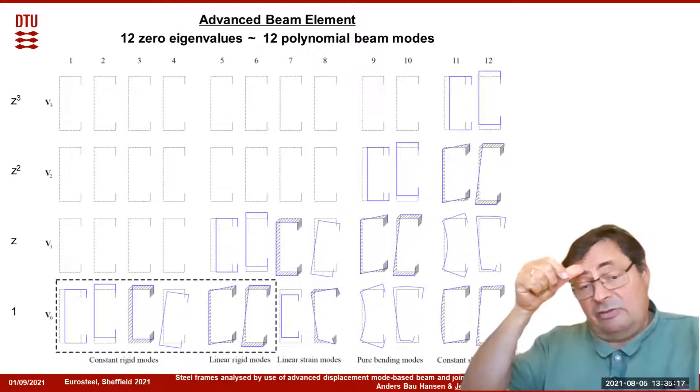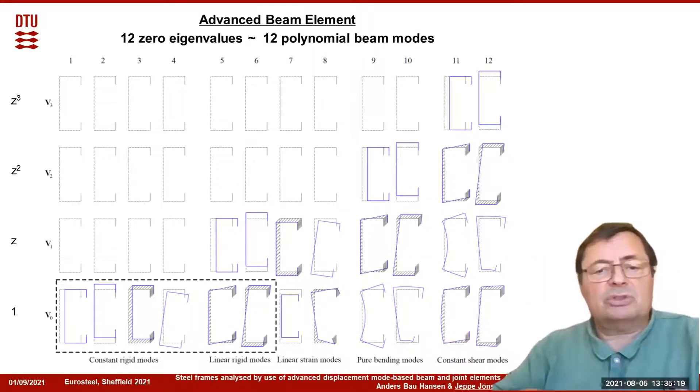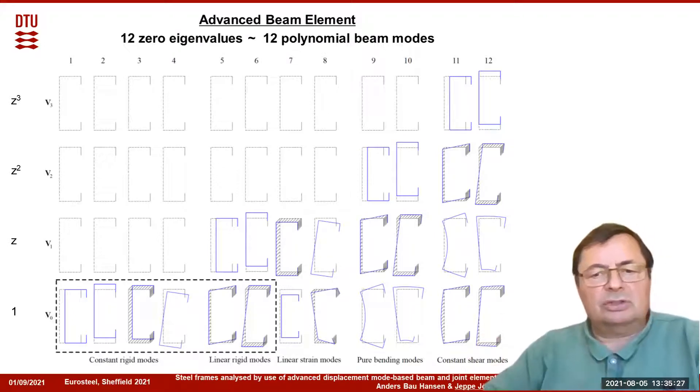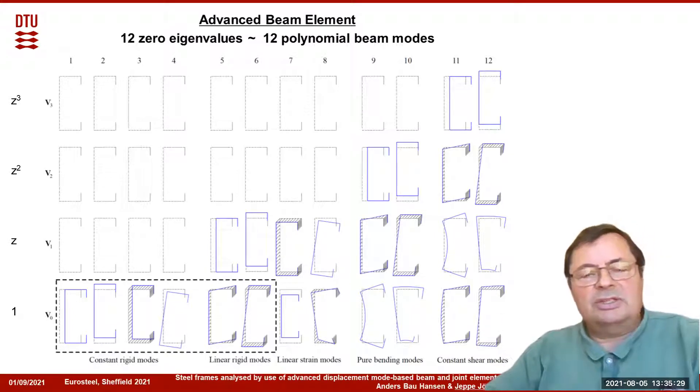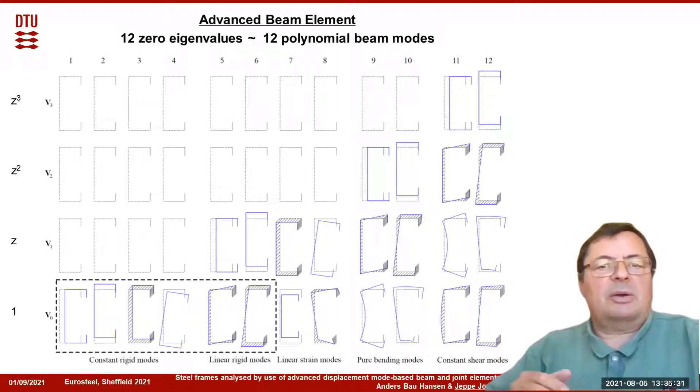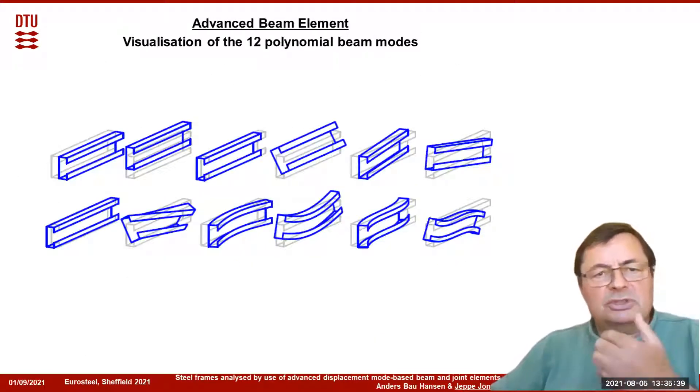Next we have the following modes: linear strain modes describing the linear variation modes, pure bending modes, constant shear modes, and these all describe what happens with the polynomial functions. We can visualize these functions instead of showing them mathematically. These are the 12 polynomial beam modes, which are what we are used to seeing.